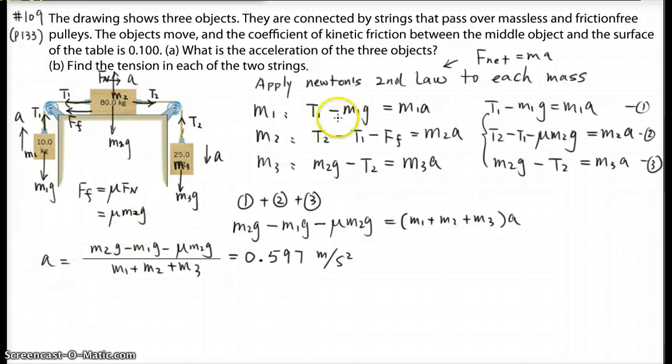Then if you plug in the A into equation 1 here, you can find out the T1. T1 is going to be M1A plus M1G equals 104 N. And then you can also plug in the A into equation 3, you can find out the T2. So T2 is going to be M3G minus, oh sorry, this is M3, so it should be M3 right here as well. M3G minus M3A equals 230 N.